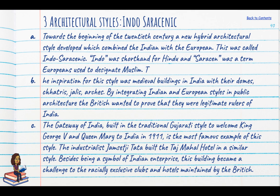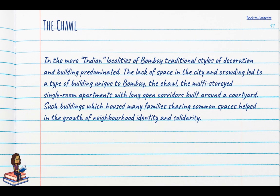The chawl was something very unique that grew in Bombay. Lack of space and overcrowding led to a type of building called a chawl — a multi-storeyed single-room apartment block with long open corridors built around a courtyard. Such buildings housed many families with shared common spaces, helping develop neighbourhood identity and solidarity, which in turn also supported the nationalist movement.